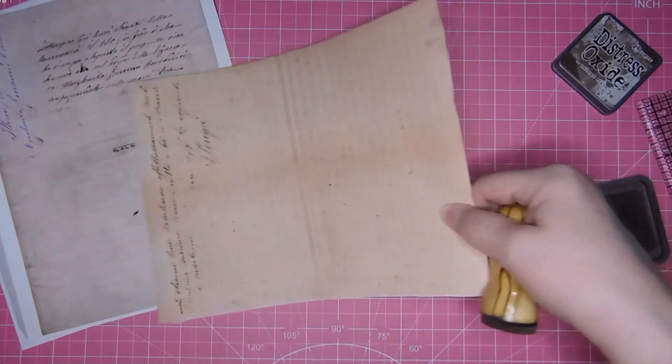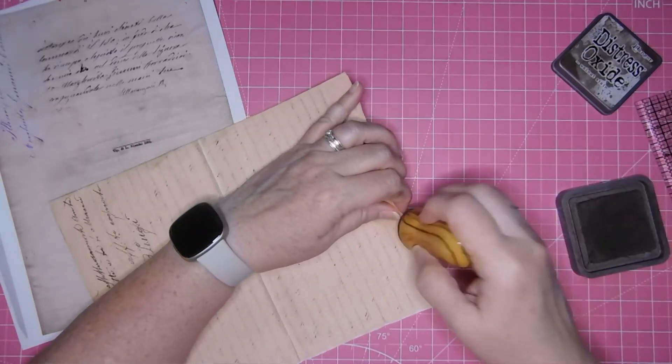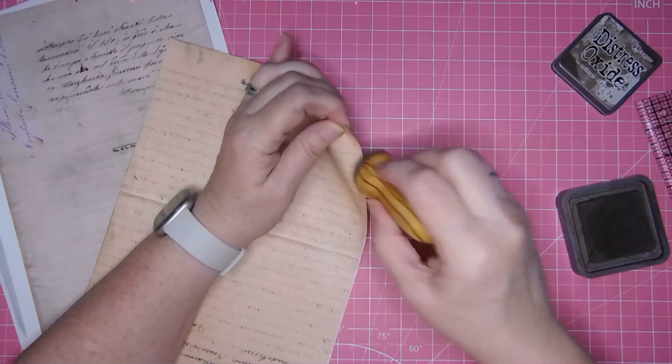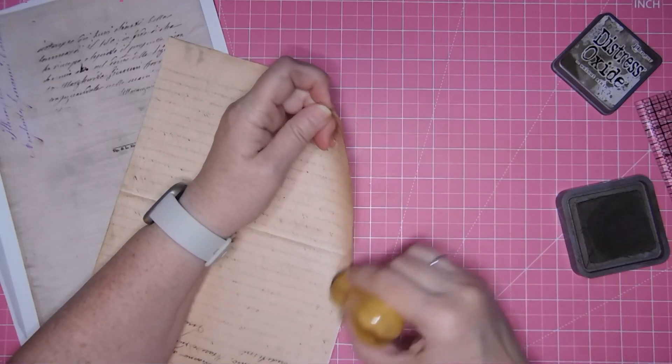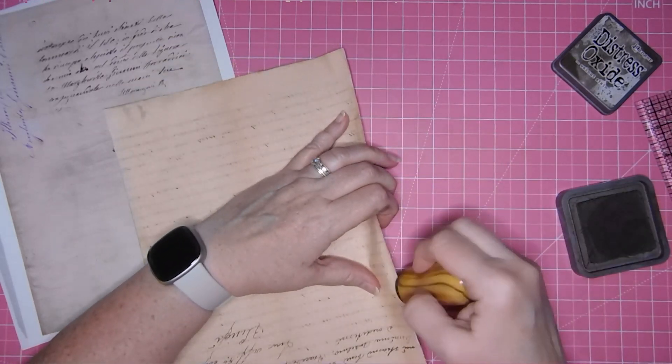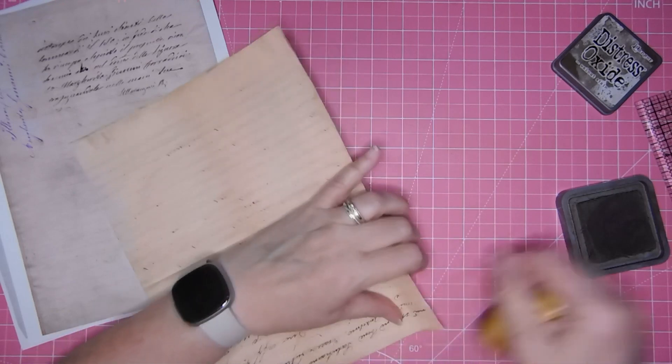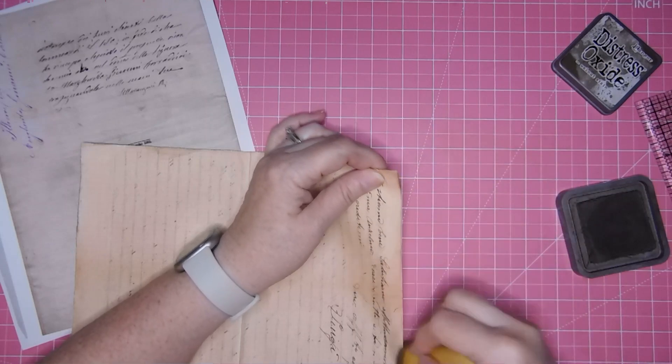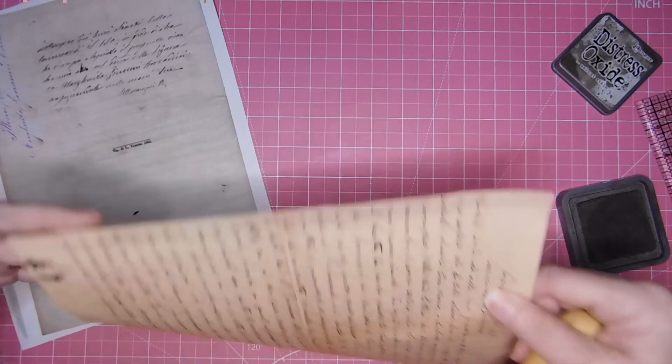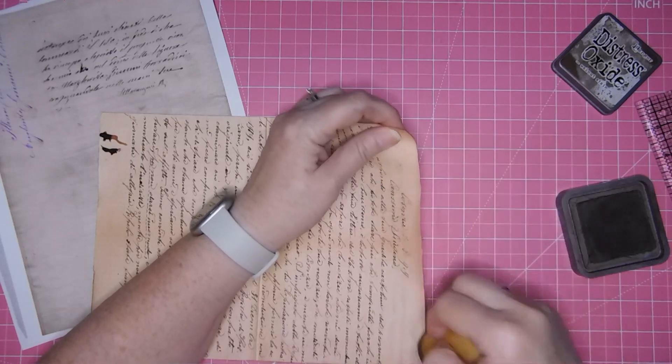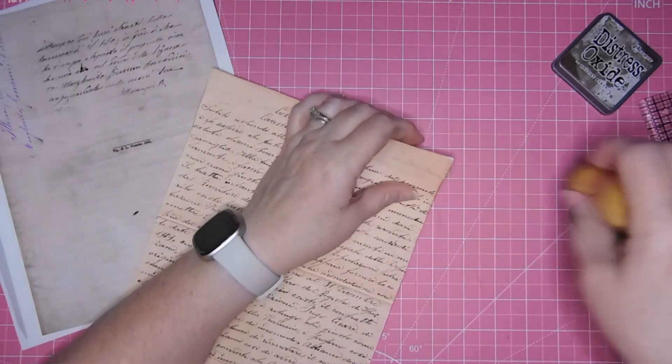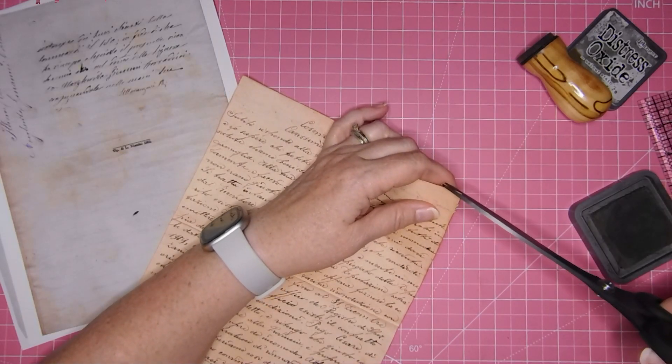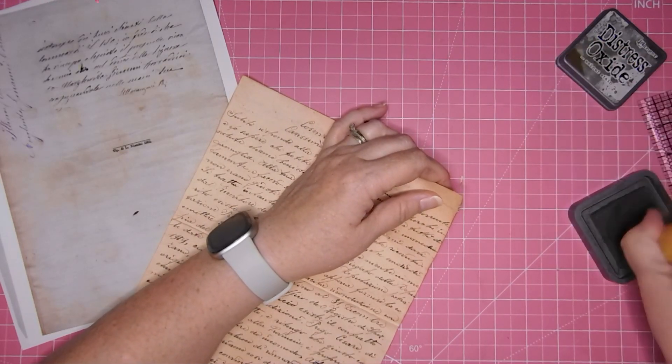So let's ink this up a little bit. I'm using my walnut stain distress oxide. That torn edge really takes the ink really well and I love that this looks like you can see through. This kit right here, I was just thinking as I was printing these papers out, this would look really cool turned into vellum, especially with the double-sided. You'd be able to see the letters, they'd kind of overlap.